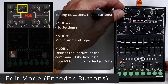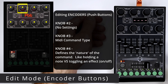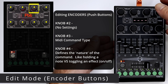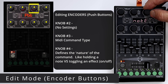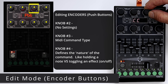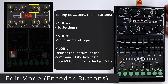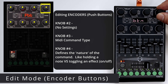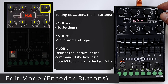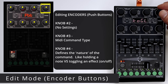For push button settings, encoder 2 has no settings. Encoder 3 configures the command type sent by the button, allowing for options like triggering notes, sending control changes, or turning it off for inactivity. Encoder 4, when push button is selected, defines the command's nature, allowing for momentary actions like holding a note, or toggling on/off states such as enabling or disabling effects.